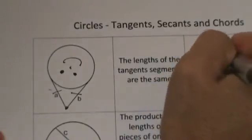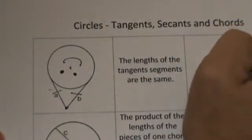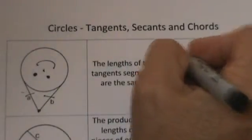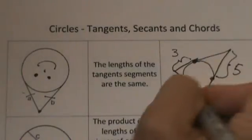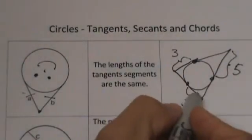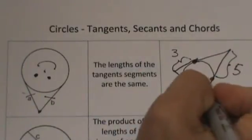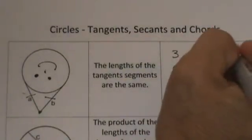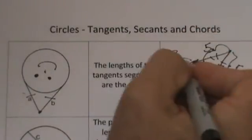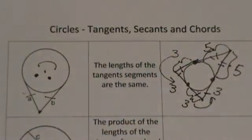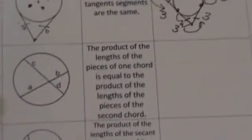So flipping back around, the rule says the lengths of the tangent segments are the same. If we have a triangle drawn around a circle and we know one segment is 3, another is 5, and another is 3, we can find the perimeter. By the party hat rule, each pair of tangent segments from the same exterior point are equal, so we add all sides: 3+3+5+5+3+3.